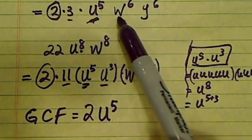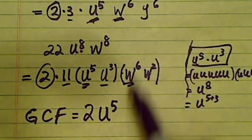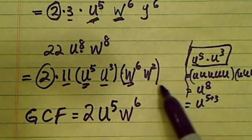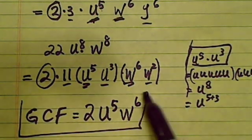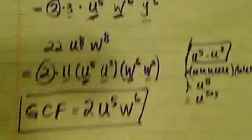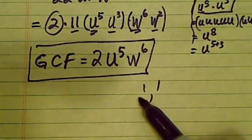I have u^3 here, but there's nothing there. w^6, I have w^6, and then there's w^2. And y^6, nothing else common. So here's my greatest common factor: 2u^5w^6. That wasn't that bad. Have a confident day!